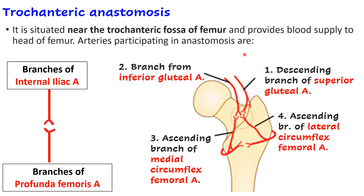Now let us look at the anastomoses present in the posterior aspect of the thigh. The first is the trochanteric anastomosis. As you will remember from general anatomy, anastomoses provide collateral circulation if there is any block in an artery. The trochanteric anastomosis is present near the trochanteric fossa of the femur.